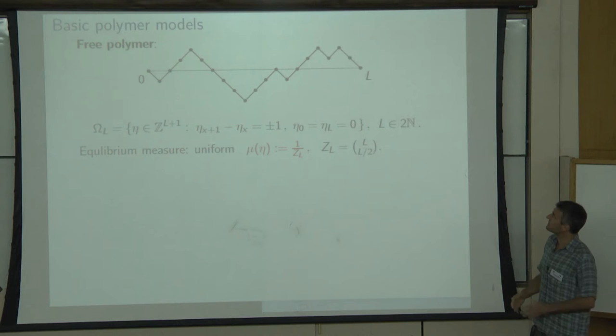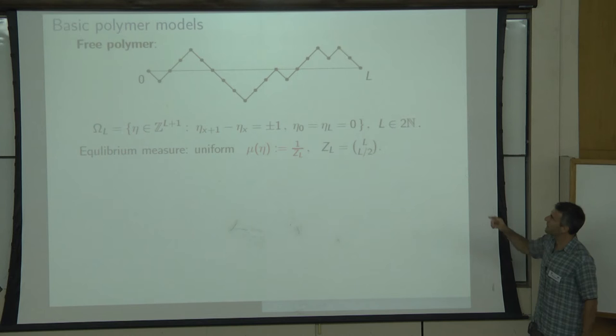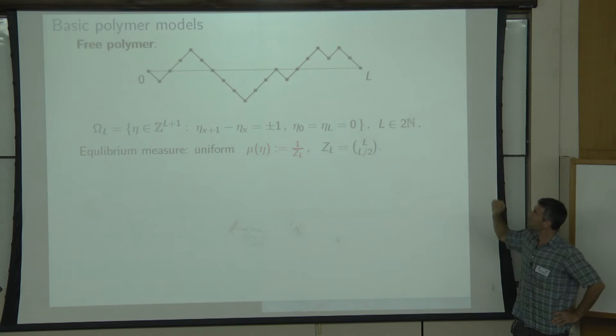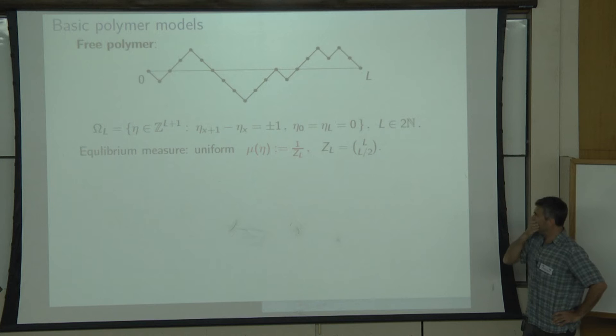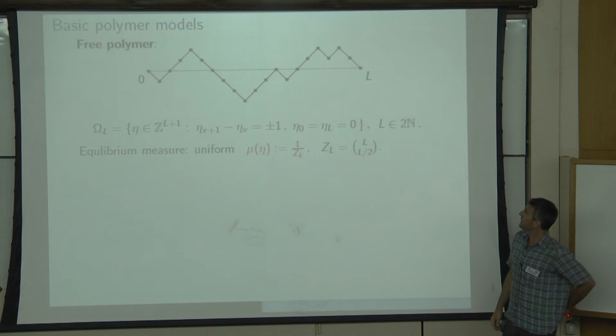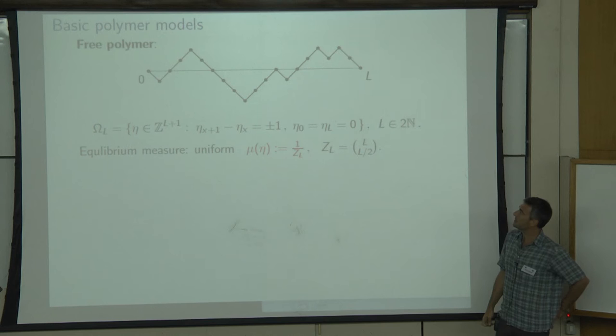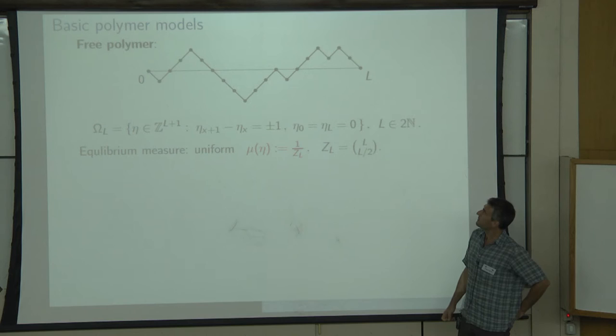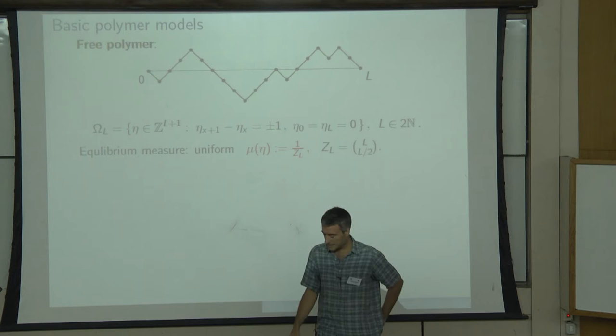Let's start with the basic object we will look at: the set of lattice paths from zero to zero after L steps. These are paths where each step is plus or minus one, and we go from zero to zero in L steps, so L is an even number. We consider the set omega L of all such objects — there are L choose L/2 such objects — and the equilibrium measure is the uniform measure over all such configurations. I will call this the free polymer.